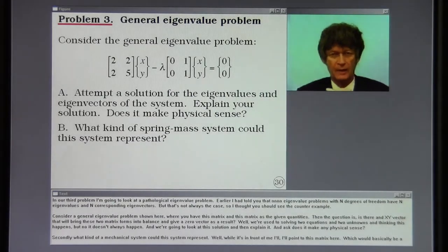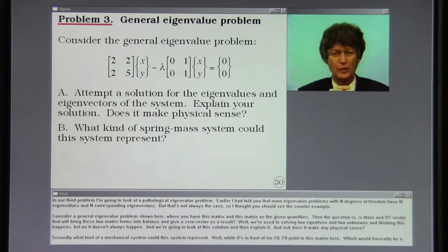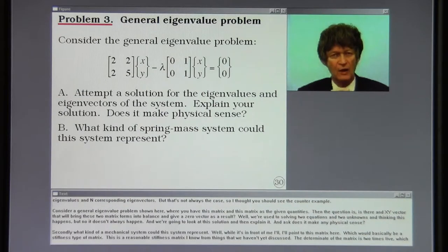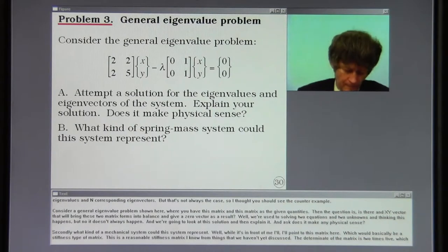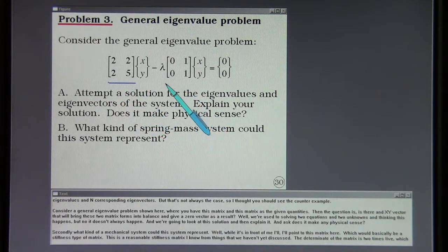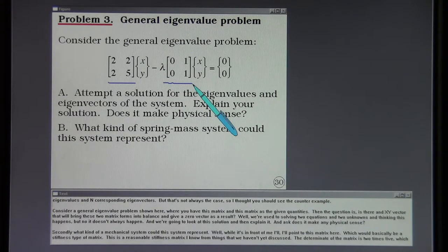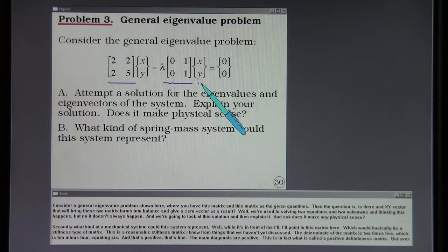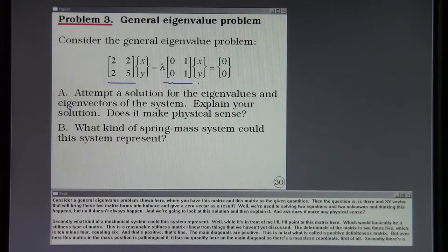In our third problem, I'm going to look at a pathological eigenvalue problem. Earlier I had told you that nice eigenvalue problems with n degrees of freedom have n eigenvalues and n corresponding eigenvectors. But that's not always the case. So I thought you should see the counter example. Consider a general eigenvalue problem shown here where you have this matrix and this matrix as the given quantities. Then the question is, is there an xy vector that will bring these two matrix forms into balance and give a zero vector as a result? We're used to solving two equations and two unknowns and thinking this happens. But no, it doesn't always happen. We're going to look at this solution and then explain it and ask, does it make any physical sense? Secondly, what kind of a mechanical system could this system represent?